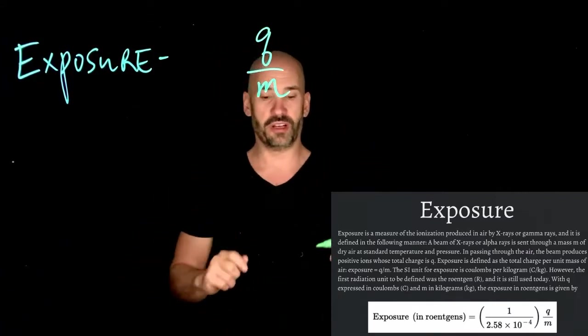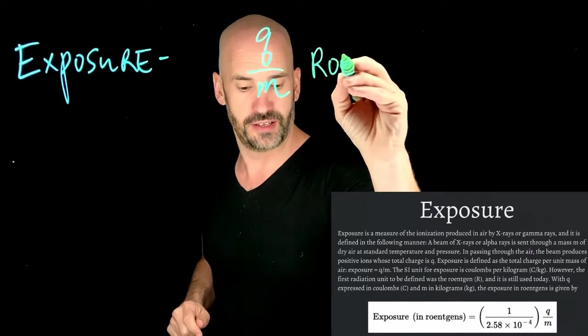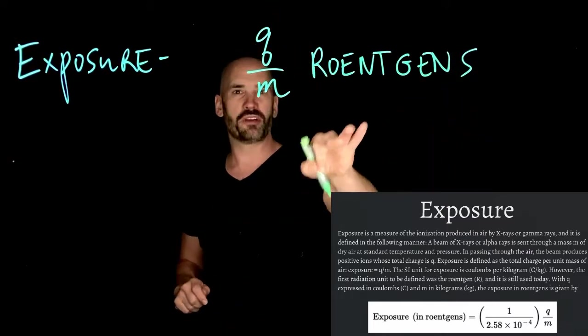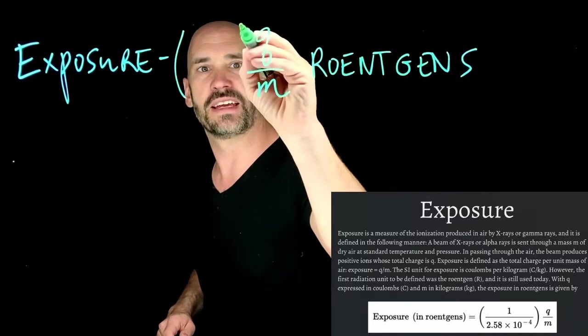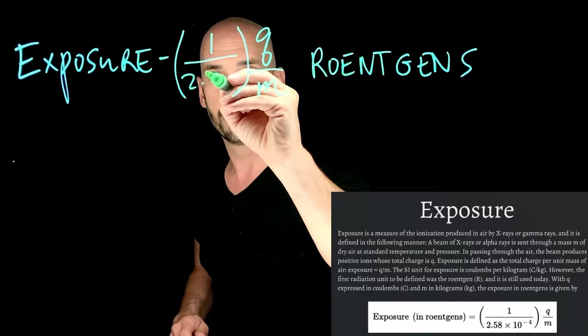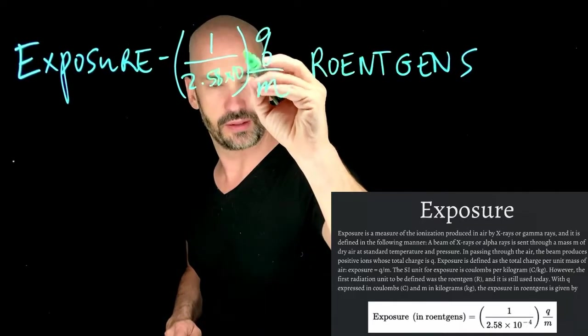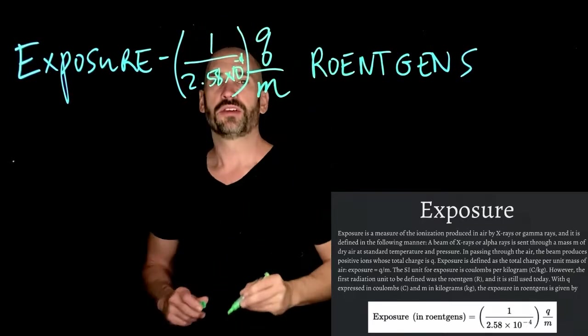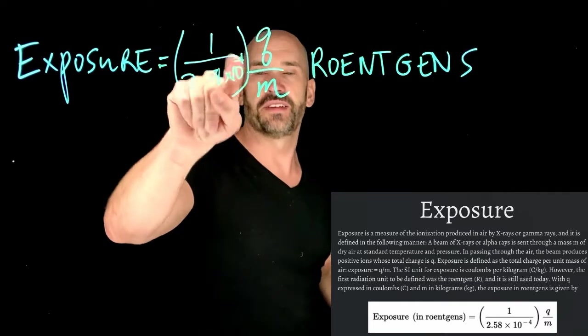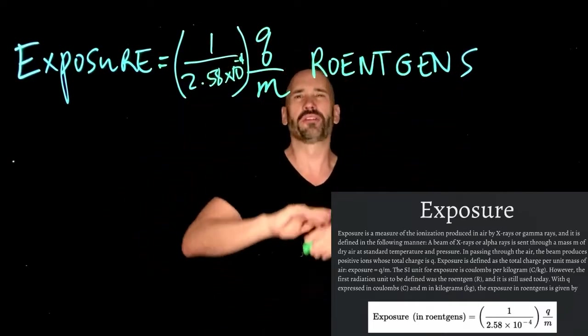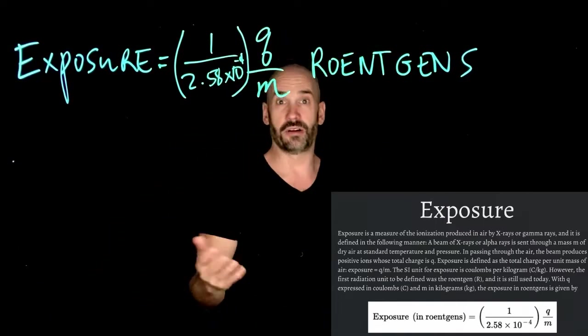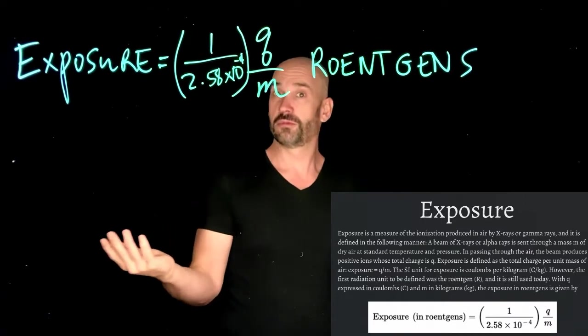But because it has this weird unit of the Roentgens, R-O-E-N-T-G-E-N-S, there's a little conversion that gets you there, which is 1 over 2.58 times 10 to the minus 4. So exposure is basically just Q over M with this little constant in front that gets it in the unit of Roentgens. Ultimately what you're measuring is the amount of charge generated in a certain mass of air as a result of this radiation.